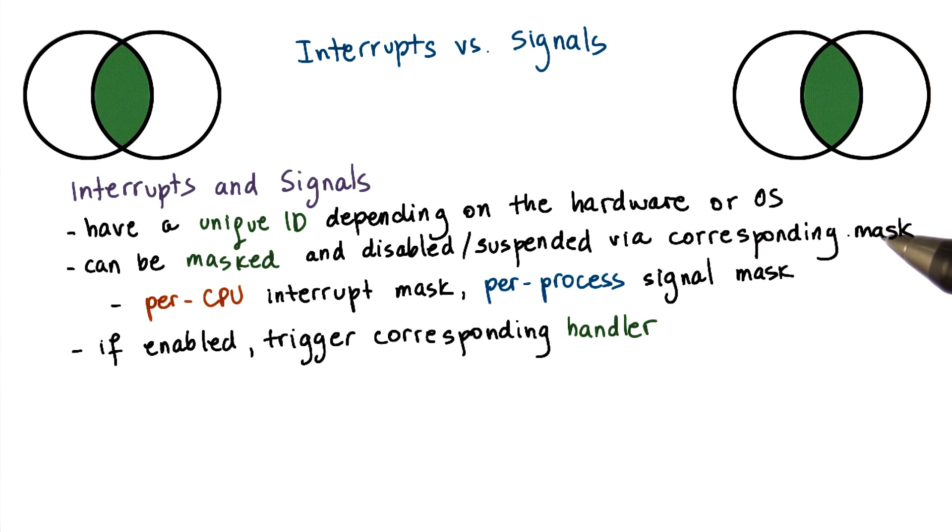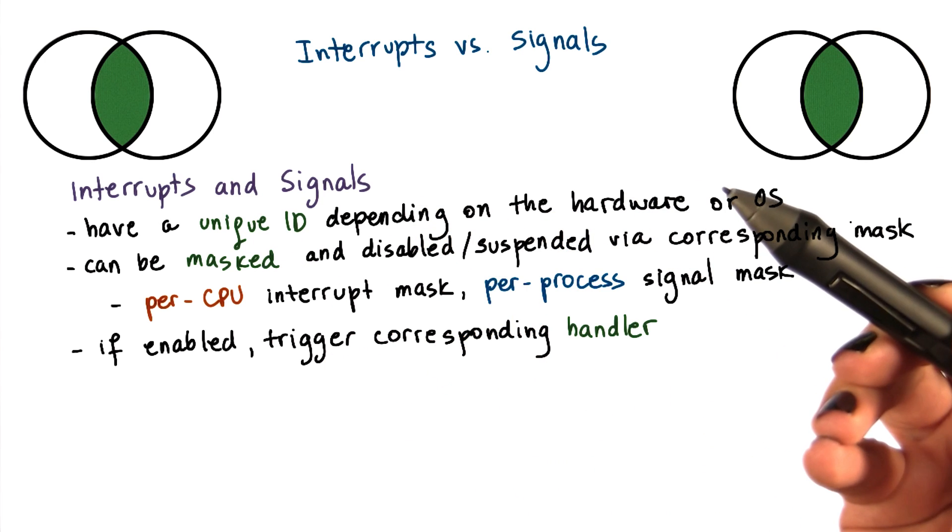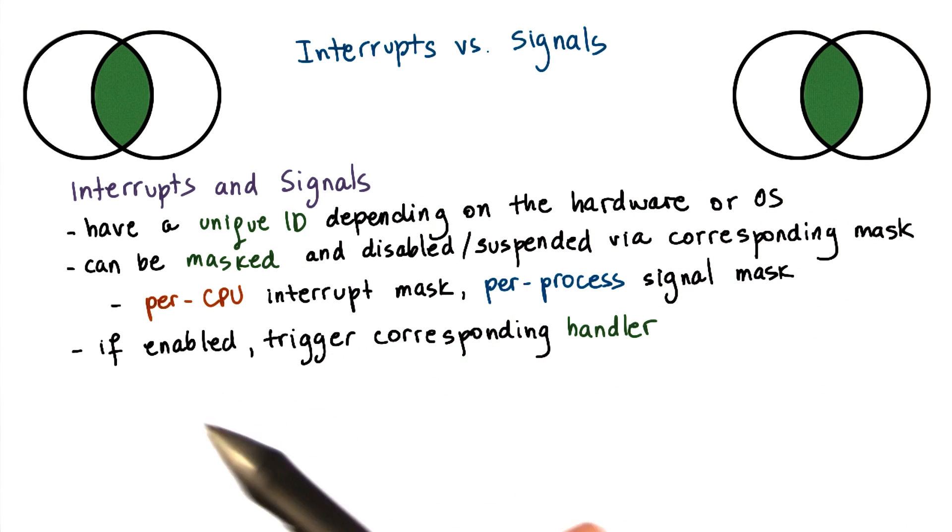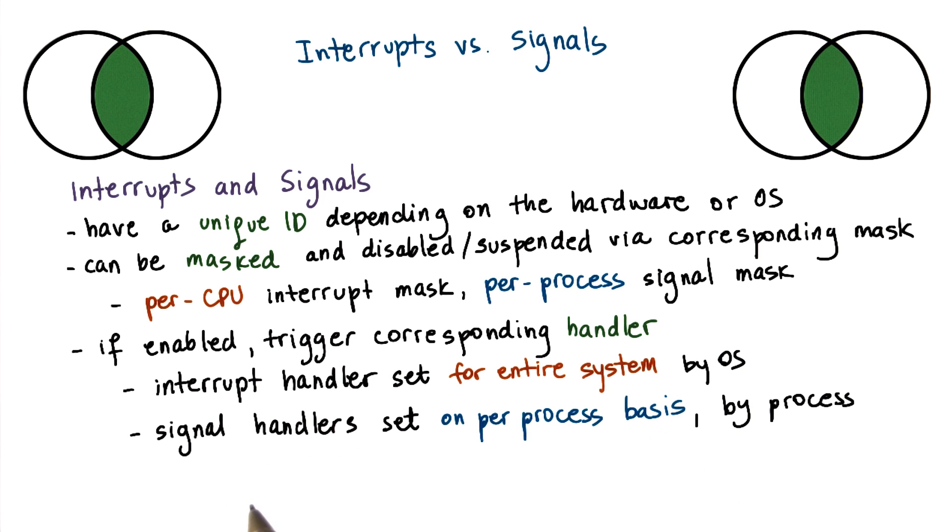If the mask indicates that the signal or the interrupt is enabled, then that will result in invoking the corresponding handler. The interrupt handlers are specified for the entire system by the operating system. For the signal handlers, however, the operating system allows processes to specify their per-process handling operations.